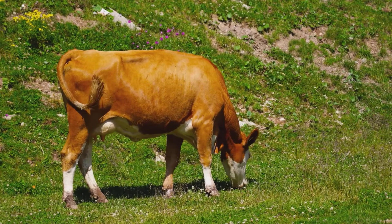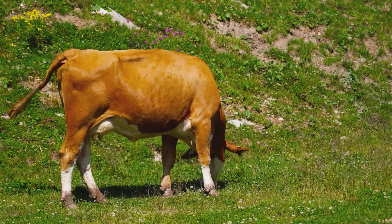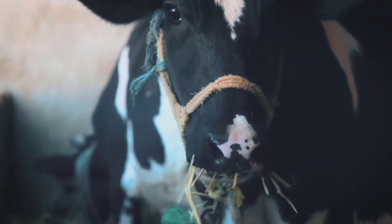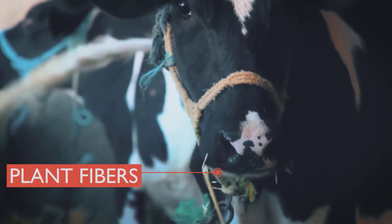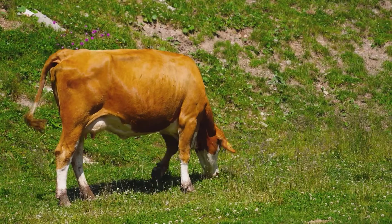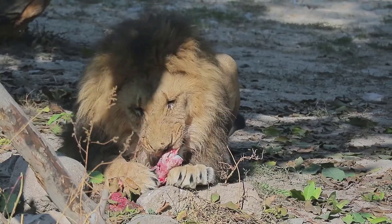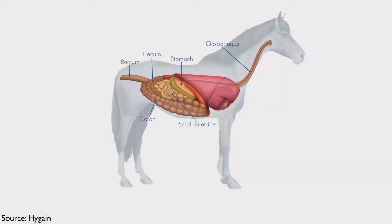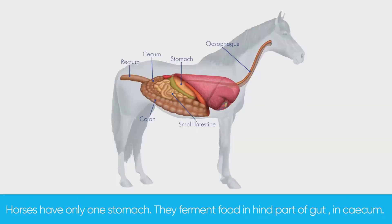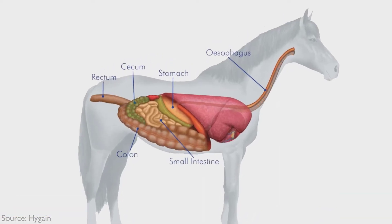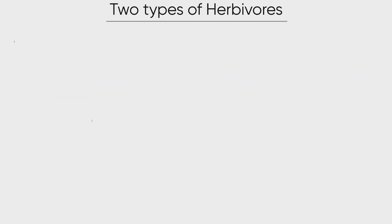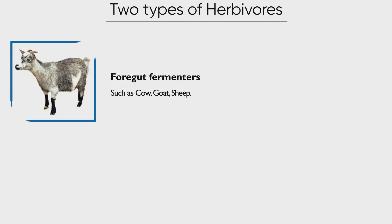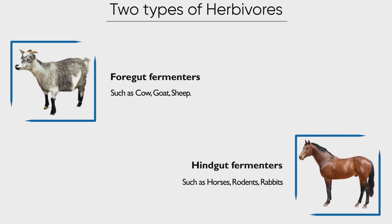One of the major differences in herbivore and carnivore stomach is due to dietary composition. Herbivore diet has plant fiber which cannot be digested alone, so bacteria present in the stomach need to ferment those fibers to produce energy for herbivores, whereas carnivores do not need that. Interestingly, a horse is also a herbivore but does not have a many-chambered stomach. Horses also ferment their food, but in the hind part of the gut, that is in the cecum. So herbivores are of two types: one, foregut fermenters like cow and goat; two, hindgut fermenters like horses.